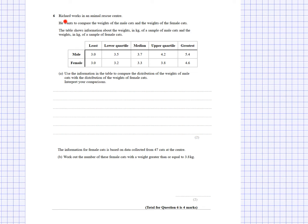Richard works in an animal rescue centre and wants to compare the weights of male cats and female cats. The table shows information about the weights in kilograms for a sample of male and female cats, giving the lowest value, lower quartile, median, upper quartile, and greatest value for each. The question asks us to use the information to compare the distribution of the weights - which means stating something about averages, spread, or shape.